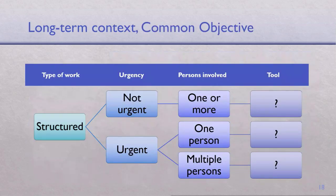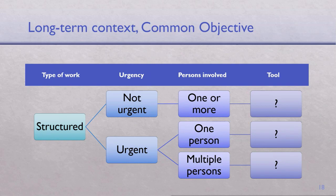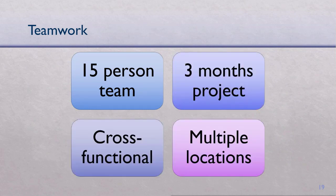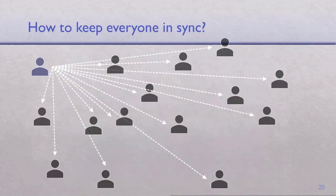Now let's come to non-ad-hoc or long-term work with common objectives — structured work. It's about a common objective, a new initiative or a project. In that context, whether urgent or not, we can't use chat and we can't use email. Let's say we have a project with a 15-person team over three months, multiple departments and locations. These people are not meeting every day, but there's a project plan with interdependent tasks. Everyone needs to know what's happening. How do you keep everyone in sync?